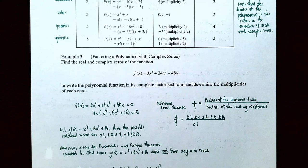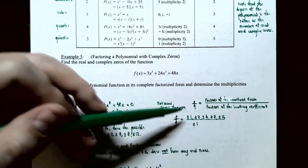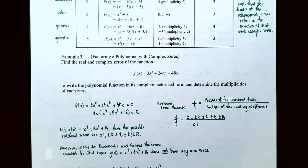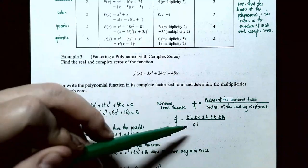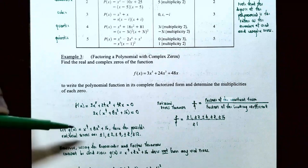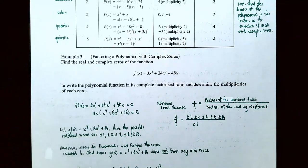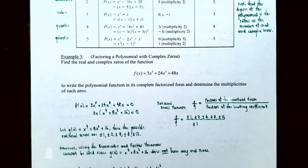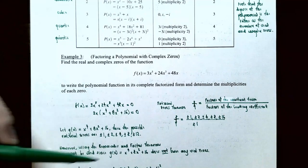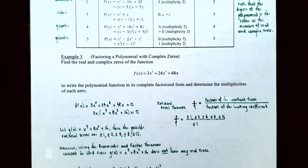Using the rational zeros theorem on x⁴ + 8x² + 16, the possible rational zeros are ±1, ±2, ±4, ±8, ±16 (factors of 16 over factors of 1). However, checking each of these gives a nonzero remainder, meaning none are rational zeros. This polynomial has only complex zeros.